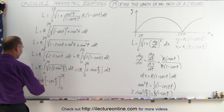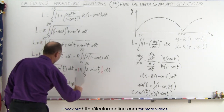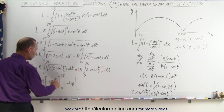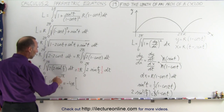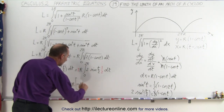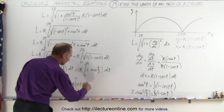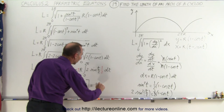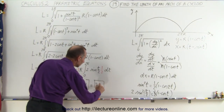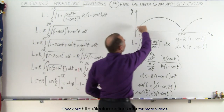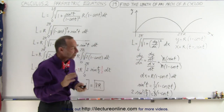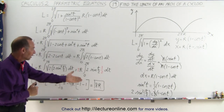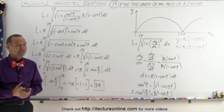Taking the negative out front gives −4r times [cosine(t/2)] from 0 to 2π. Plugging in: cosine(2π/2) = cosine(π) = −1, and cosine(0) = 1, so we get −4r times (−1 − 1) = −4r times −2 = 8r. That is the length of one single arch of a cycloid, which is indeed greater than 2πr since 8r > 6.28r. That's how it's done.